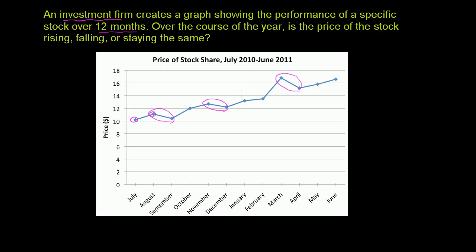But they're asking us not whether it went up every month — they're saying over the course of the year, is the price of the stock rising, falling, or staying the same? And if you go from July, where our data starts, the price was around $10. And even though there were a few months where it went down, the overall trend is that the price is going up.